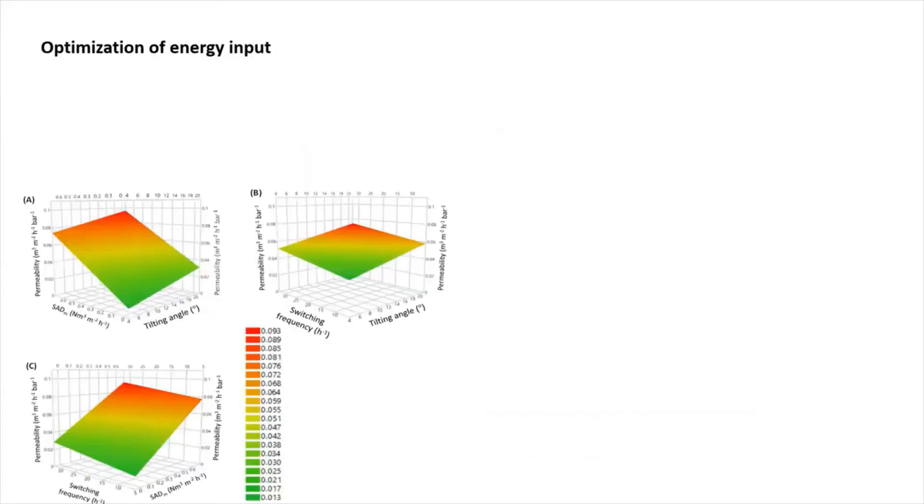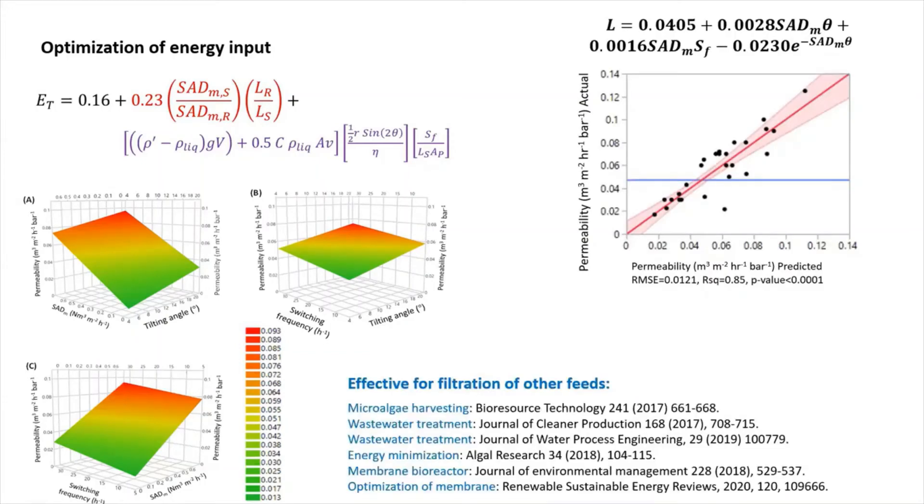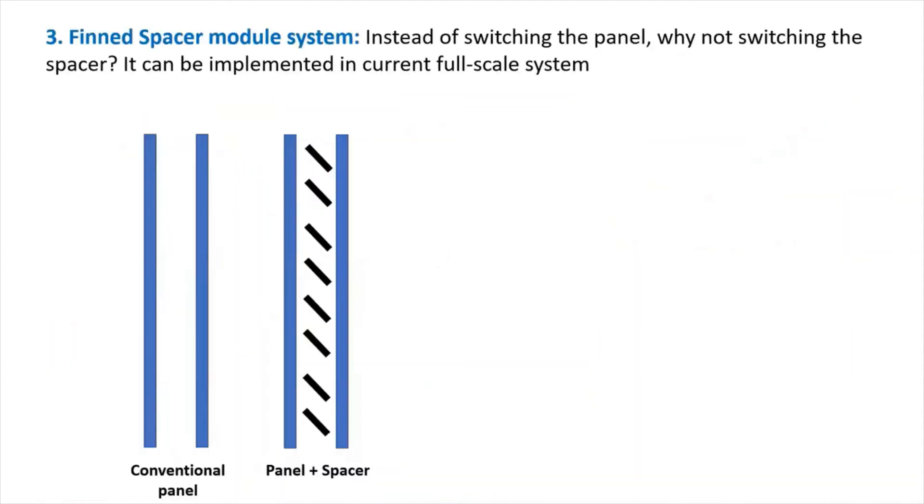And then we can perform some sort of optimization by developing the equation that links between energy and operational parameters to achieve very low energy consumption. Actually, by implementing this system, it can reduce up to 41% of the energy consumption. Here, I list some of the papers we published related to this concept.